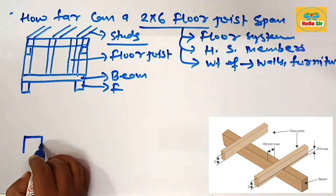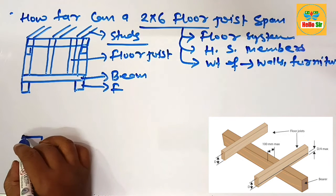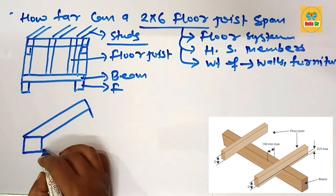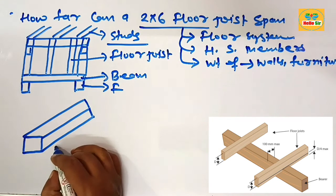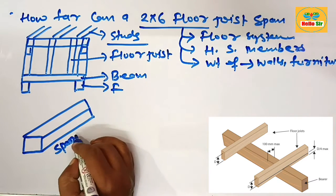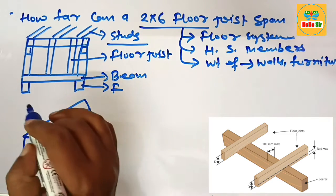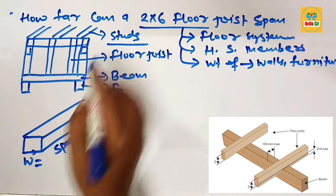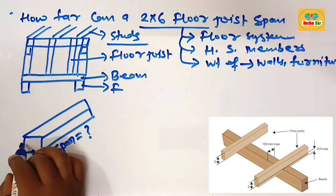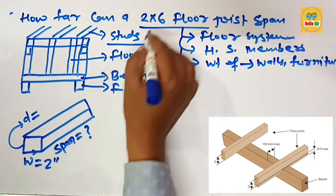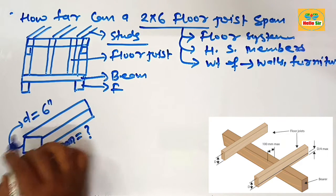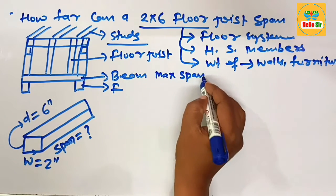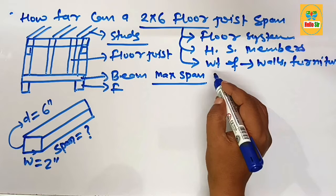Make a rough diagram to understand the dimensions of the floor joist. This one is the span length of the floor joist you have to find. This one is the width section equal to 2 inches, and this will be the depth section of the floor joist, which is about 6 inches. The maximum span of the floor joist depends on many factors.